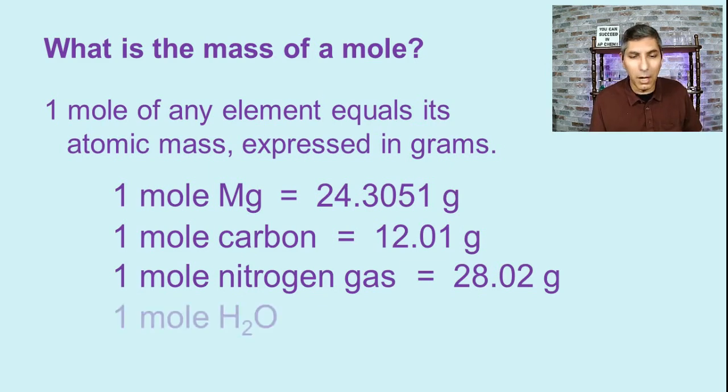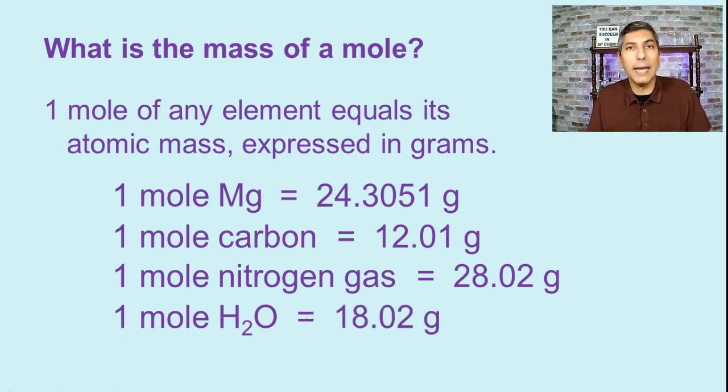We can do the same thing for chemical compounds as well. If we have water, H2O, we have to take the atomic mass of hydrogen and multiply that by two and then add in the atomic mass of oxygen. You can look at the periodic table and see that that's very close to 18. It's about 18.02 grams. So that means that you can weigh out 18.02 grams of water and then point to that and say that is 602 sextillion molecules of water. This is how we find the mass of a mole.